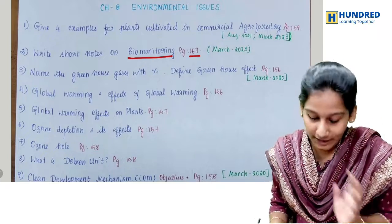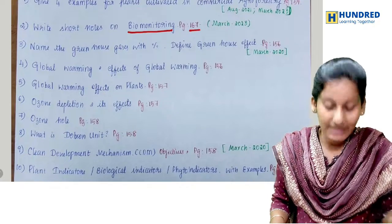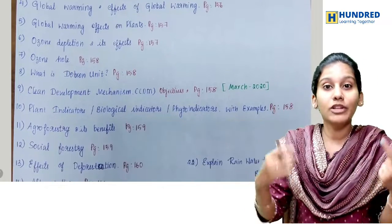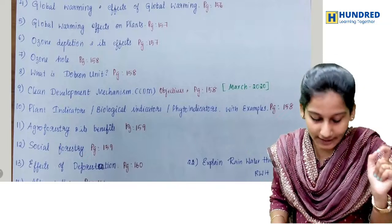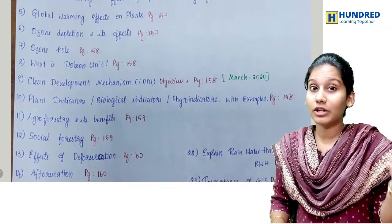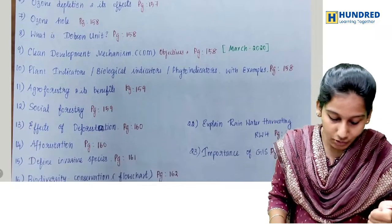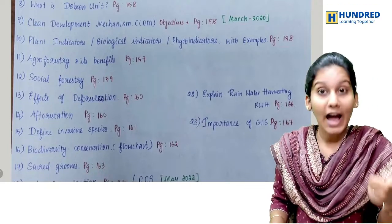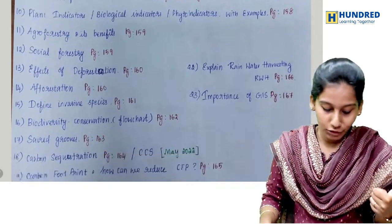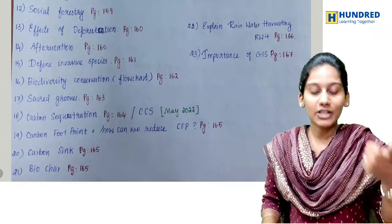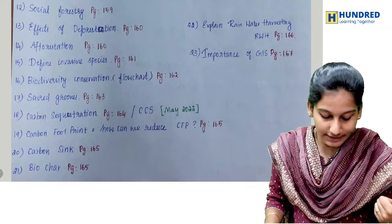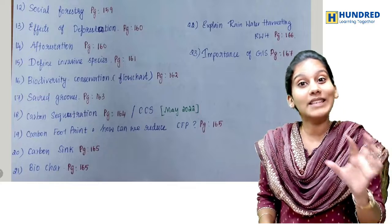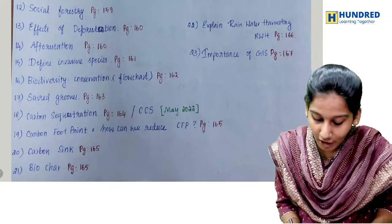Other important questions include global warming, greenhouse effect, percentage of gases, ozone — and very importantly, Dobson's unit. Also: clean development mechanism, agroforestry, social forestry, deforestation, afforestation, sacred grooves, and carbon sequestration — related to CZS.